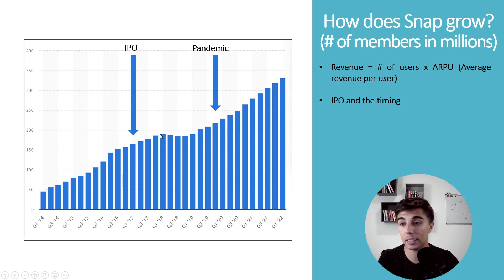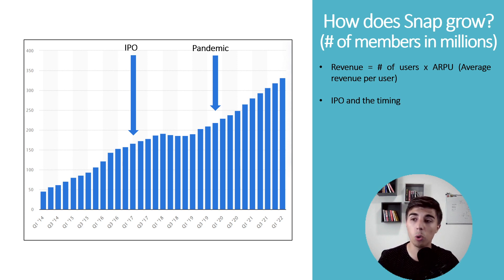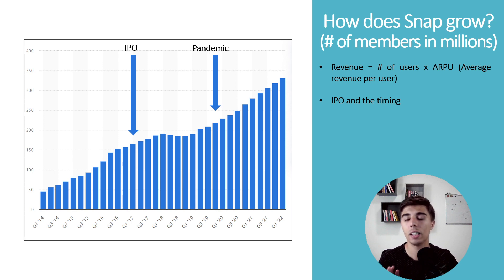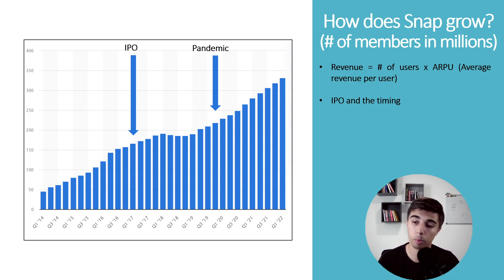IPOs are being priced with a lot of hype around them. This is proof that in most cases — actually in all cases — we should be very cautious about historical performance and ask ourselves how likely it is to continue, or whether they are just timing the right quarter to go public, since they publish data on a quarterly basis.